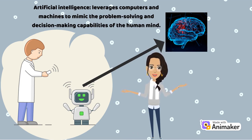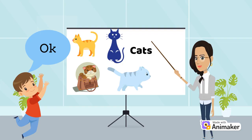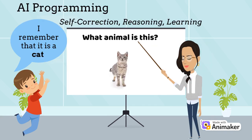But for this to happen, the machine has to learn a lot of patterns. If you think about it, teaching an AI bot is quite similar to teaching a child. For instance, let's suppose you show a child some cat pictures, and you tell the child that the animal shown is a cat. Then you show the child a different picture of a cat, and he or she automatically recognizes that it is a cat, because they have seen this pattern before. In the same way, AI programming is all about self-correction, reasoning, and learning.